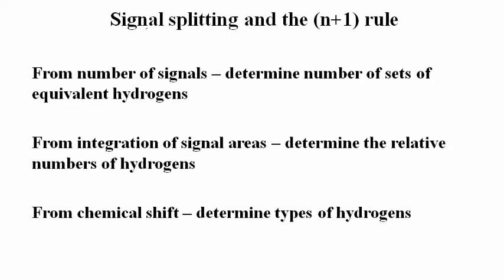We've seen that three types of information can be derived from examining a spectrum. From the number of signals, we can determine the number of sets of equivalent hydrogens. From the integration of signal areas, we can determine the relative numbers of hydrogens that give rise to each signal. And from the chemical shift of each signal, we derive information about the types of hydrogens in each set.